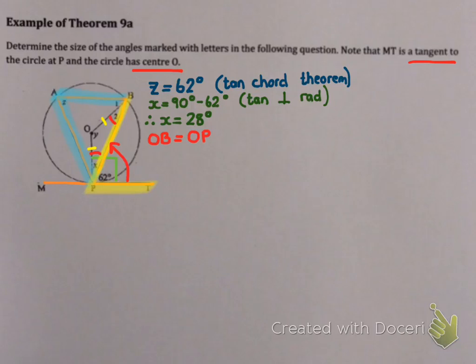OB equals OP because of radii. Now this means that B2 will be equal to X, which I've already seen as 28 degrees. And my reason? Angles opposite equal sides. Now that's perfect.